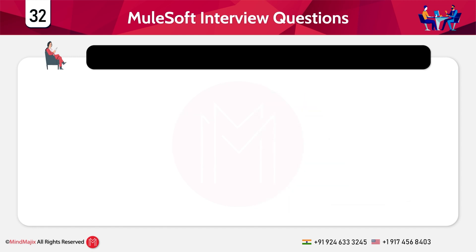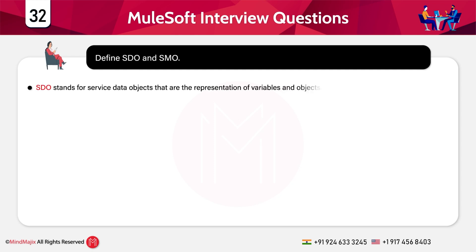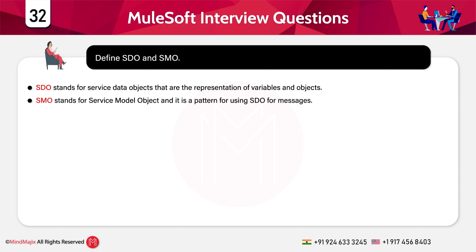What do you mean by SDO and SMO? SDO stands for Service Data Objects — they are a representation of variables and objects. SMO is Service Message Object — it is a pattern for use in SDO for messages.